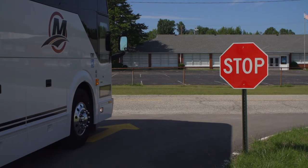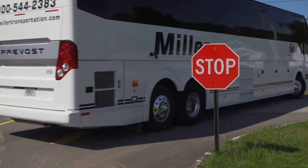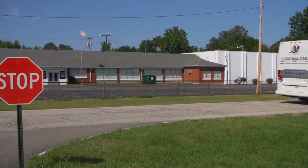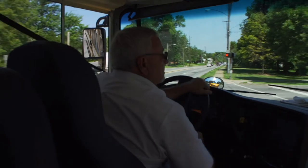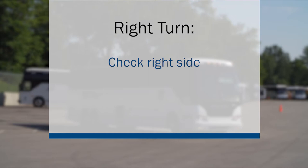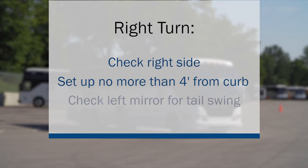Typically, when you make a right turn, it's at an intersection or in a parking lot. Since there are a significant number of accidents which happen while a driver is making a right turn, it's important once again to ensure your mirrors are properly adjusted to be able to see objects, people, or vehicles on the right side of the motor coach. Check to the right side of the motor coach, if possible, for any obstacles, vehicles, or pedestrians. This will help you in clearing the turn during the maneuver. Set up your turn no more than four feet from the curb. Look at your left mirrors briefly to ensure that your left tail swing has adequate clearance from vehicles, objects, and pedestrians.